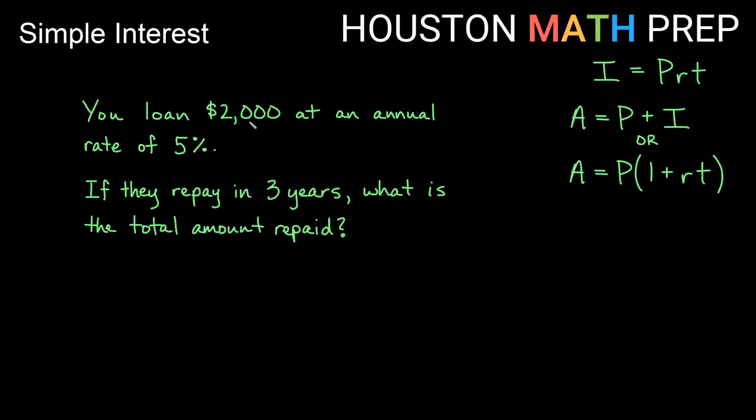Let's look at one of those. So here we have a loan of $2,000. We're actually loaning somebody else at an annual rate of 5%. So 5% per year, they're repaying in three years. Now it's not asking for both the interest and the ending balance that they pay me back. It's only asking for how much is the total repaid. In other words, we just need to know A. We don't also need to know I separately. So I may just go ahead and opt to use this A equals P times one plus RT instead of first finding interest and then going back and adding it.